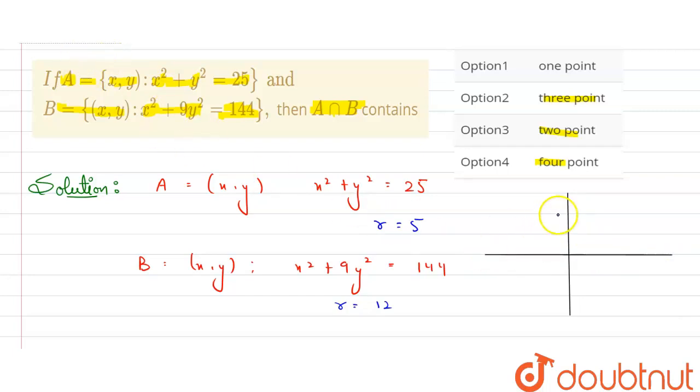I said these represent circle and ellipse. So suppose this is my circle of radius 5. This point here is -5 and here this point is +5. So 12 will lie here, suppose this is -12 and this is +12.